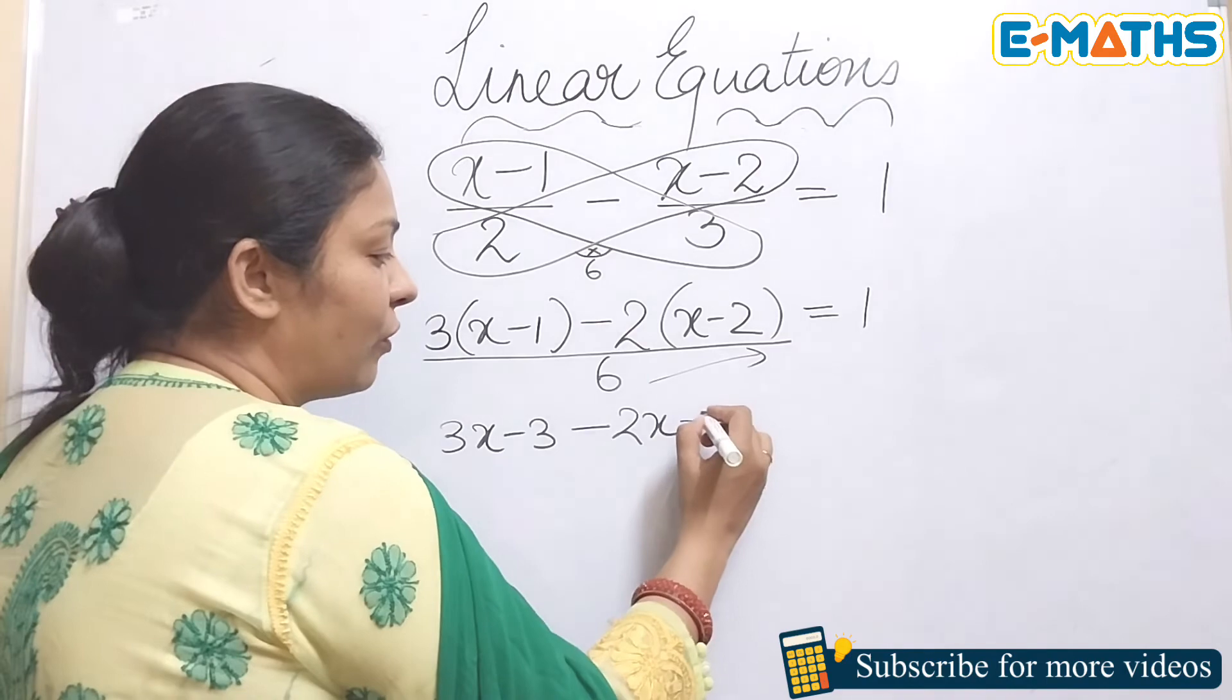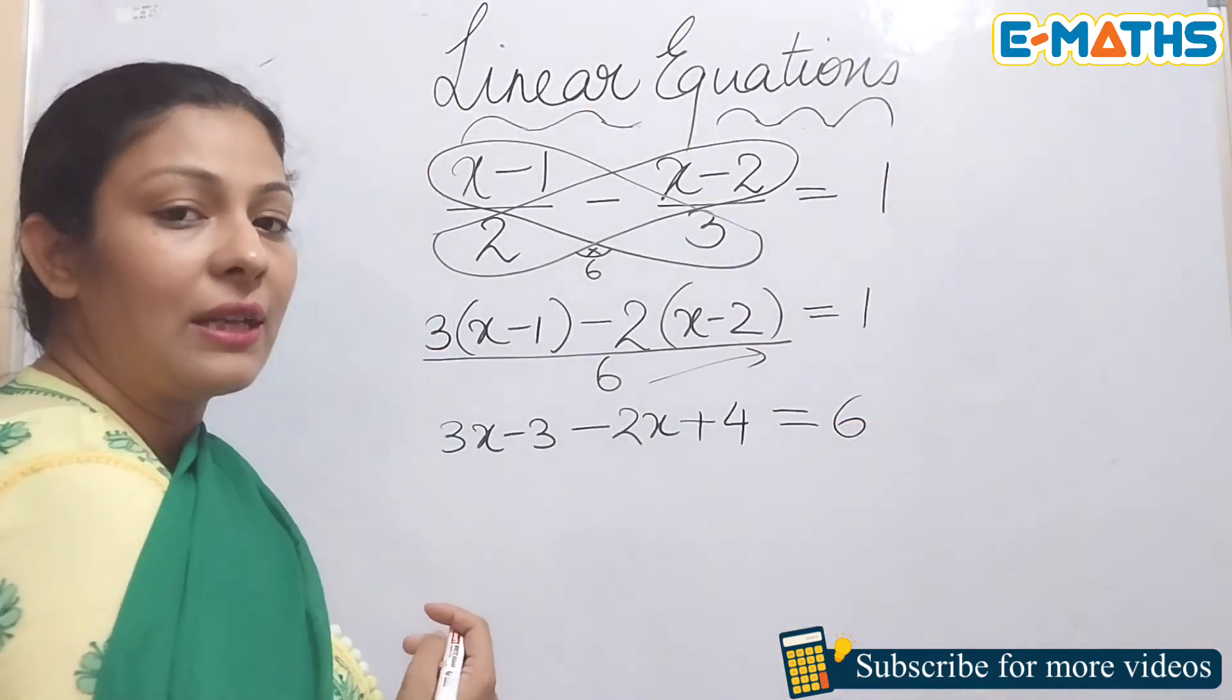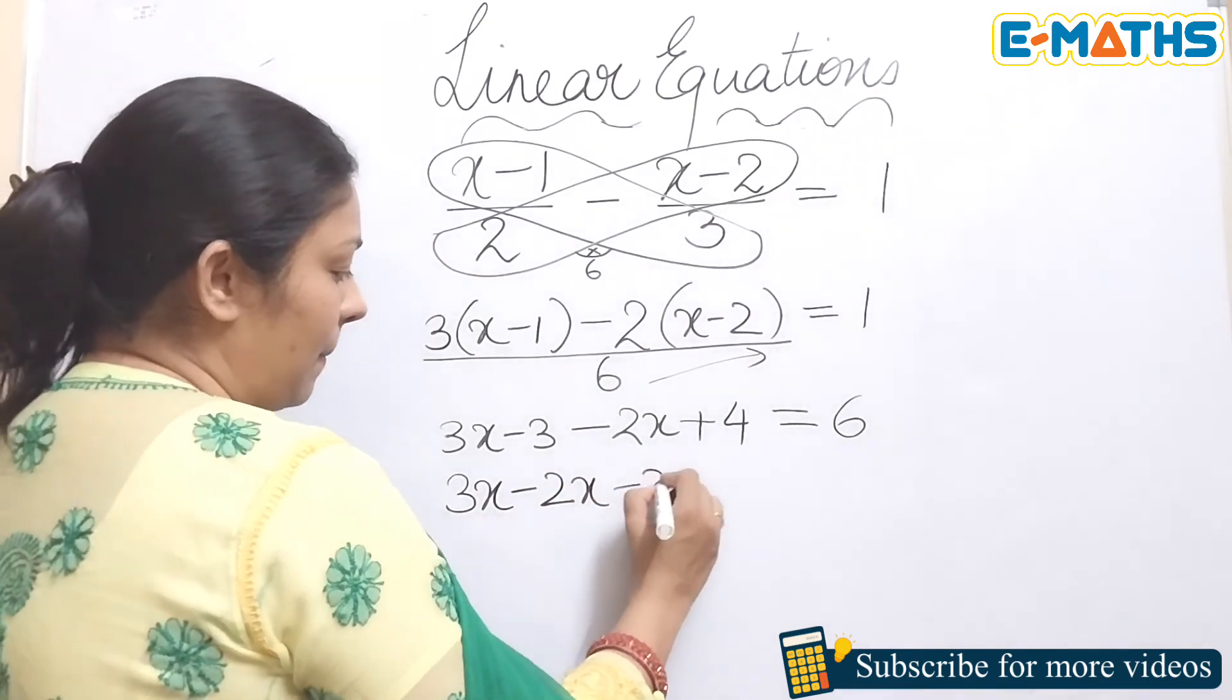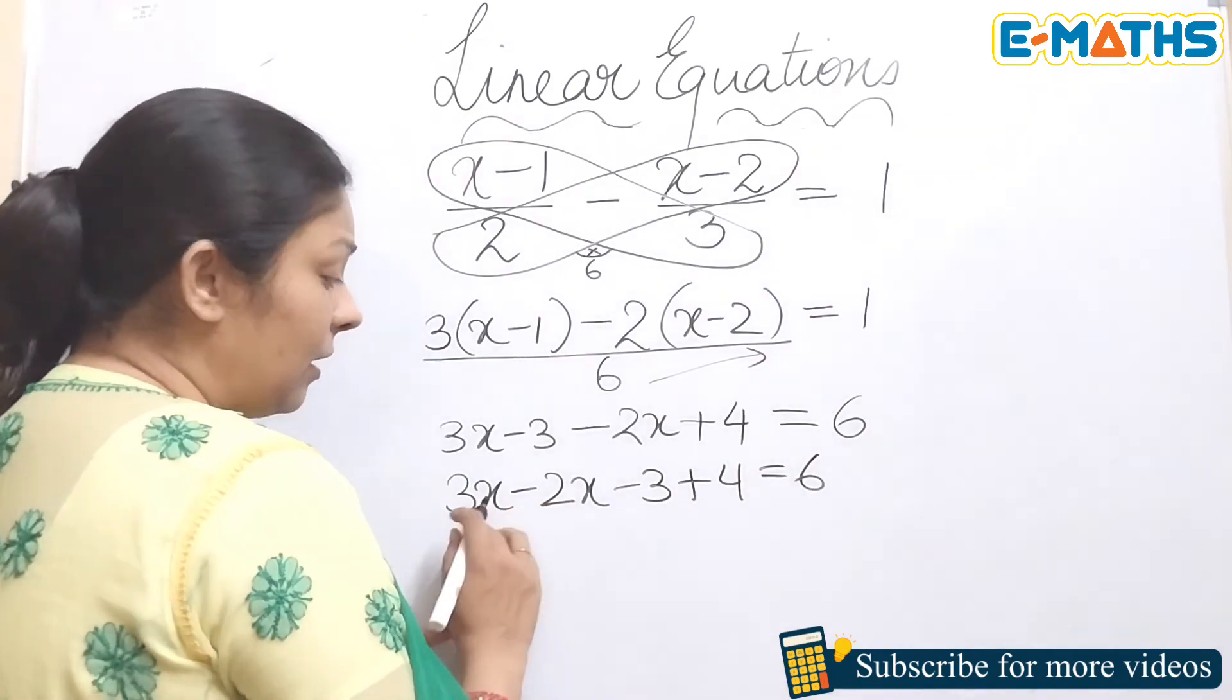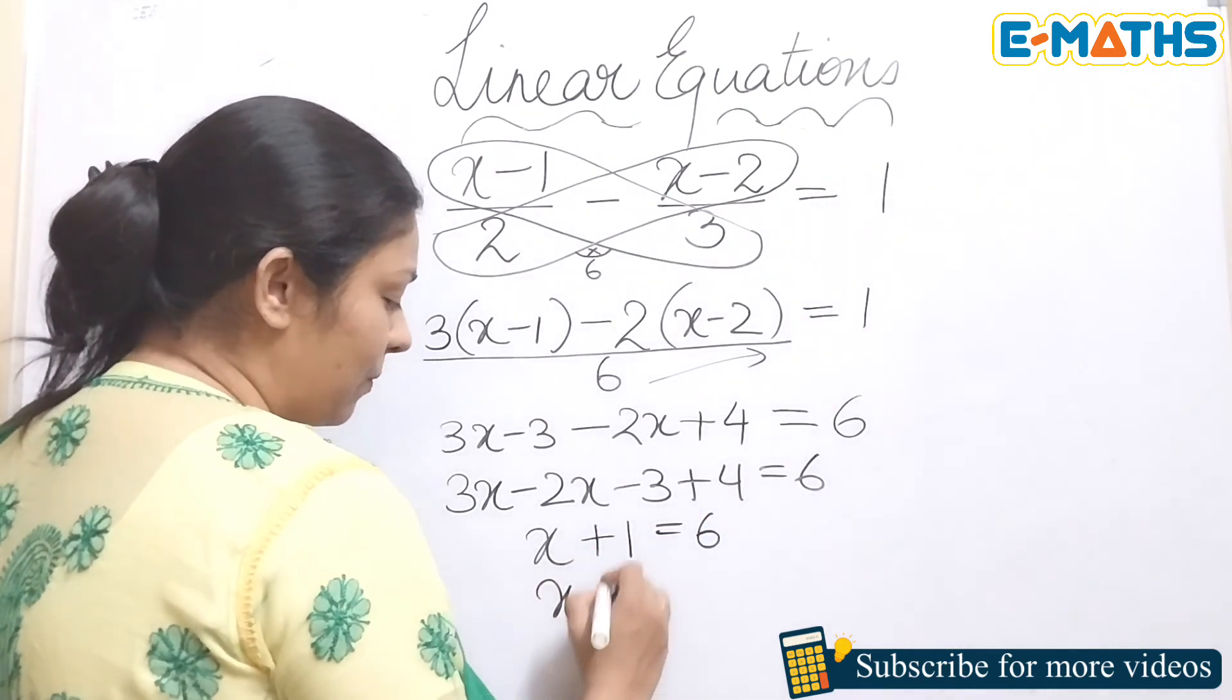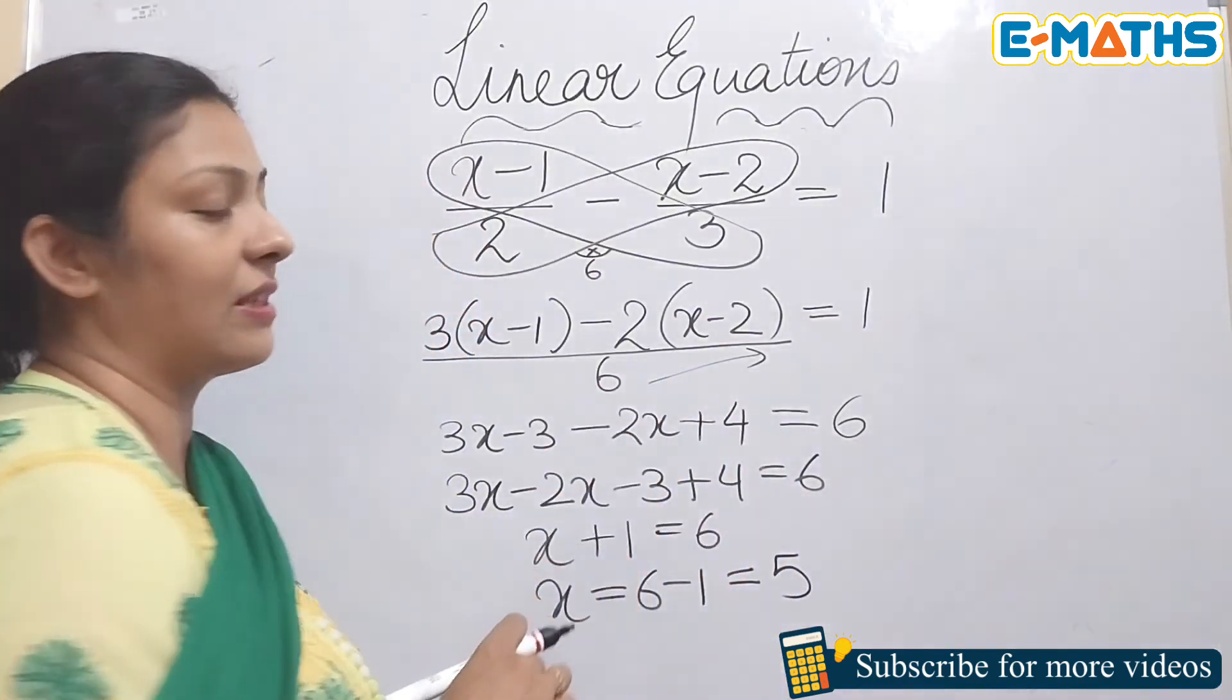As I told you, we can multiply this 6 on the other hand side, so this will give you 6. Now keeping all the x's together: 3x minus 2x minus 3 plus 4 equals to 6. 3x minus 2x is x, minus 3 plus 4 is plus 1 equals to 6. Transpose this plus 1 on the other hand side, so this will be 6 minus 1, which will give you 5 as the answer.